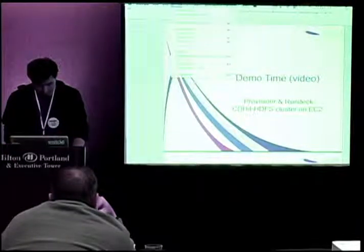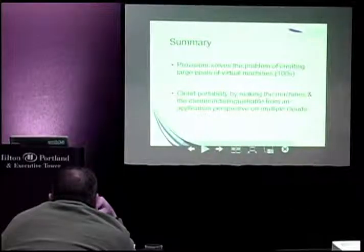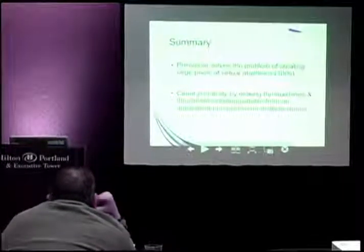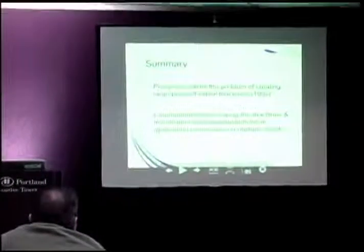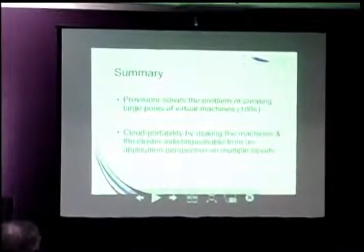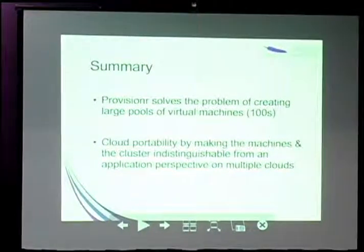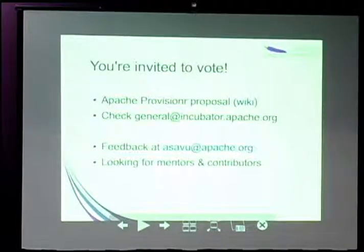To summarize: the problem we want to solve with Provisioner is creating large pools of virtual machines. While doing this, we want to solve cloud portability problems by making the clusters indistinguishable from an application perspective. If we start the same cluster on Amazon or on CloudStack, from an application perspective it should be impossible to tell which cloud you're running on. I invite you to vote — there is a proposal I sent yesterday on General at Incubator, and we are still looking for mentors and contributors.